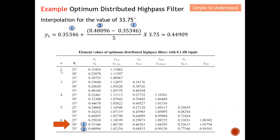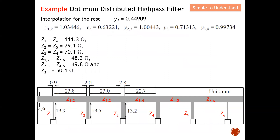To apply the interpolation formula: substitute the lower-bound value, the upper-bound value, keep the denominator as 5 (the degree spacing is always 5), and use the specific separation based on your calculated electrical length. Using this approach, you can calculate all values: Y1, Y12, Y2, Y23, Y3, and Y34. If you follow through without mistakes, you should be able to derive all the admittance values shown in the table, including Y12 for the connecting line.